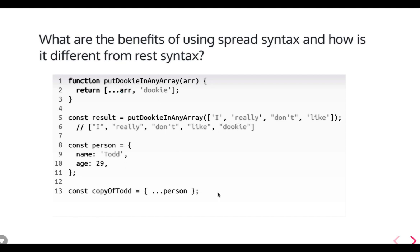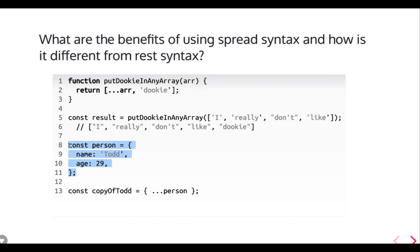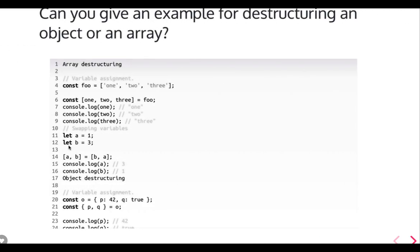Whenever you need to do a deep copy you can use the spread operator — it will spread the values around it and create the object again, giving you a deep copy of the person object. The triple-dot operator is used everywhere: as a spread operator, as a rest parameter, for removing a property from an object, or for concatenating two arrays — dot dot dot array1, comma, dot dot dot array2 inside an array.